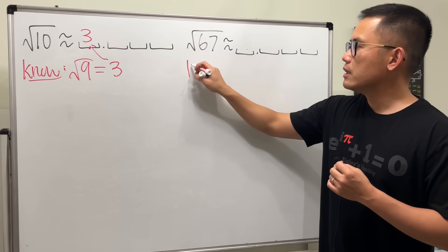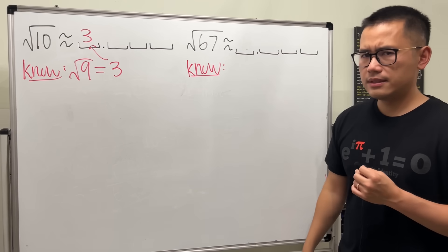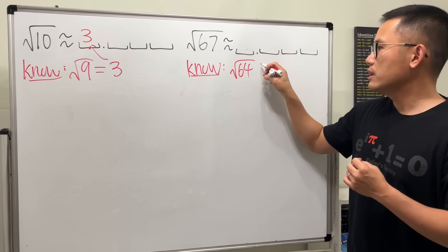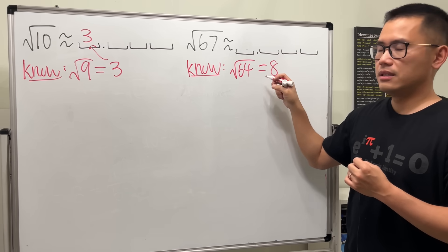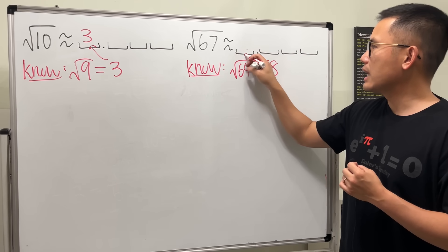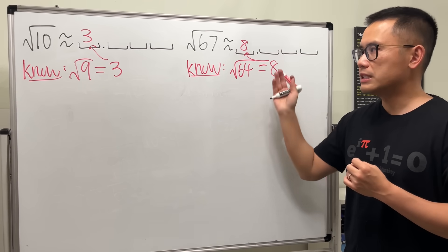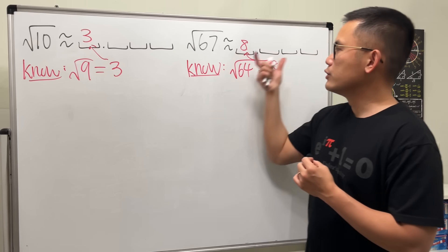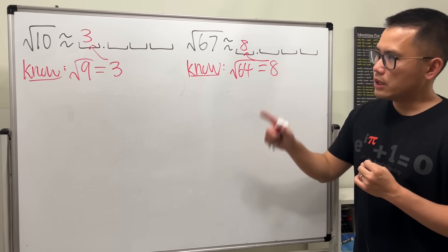Likewise here, square root of 67. Well, we know square root of 64 is 8. This is just a little bit bigger than that, right? So we must have the 8 coming here. So it must be 8 point something.